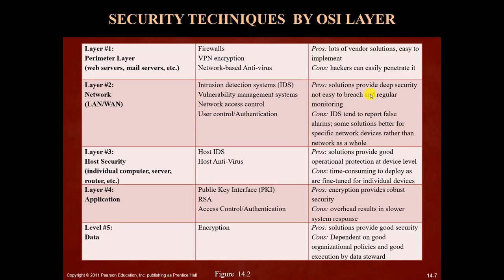Welcome to part 2 of chapter 14, a video presentation devoted to information system security. In part 2 we will talk briefly about some typical technical solutions to information system security, the role of the so-called chief security officer, some approaches to information risk management, and finally the role of certain legislature for ensuring that every organization has adequate information system security controls.